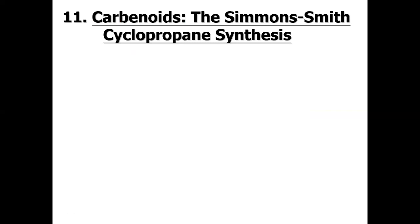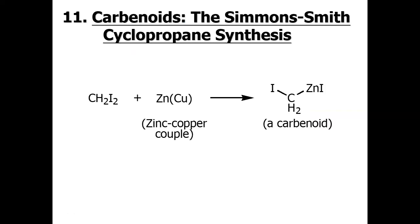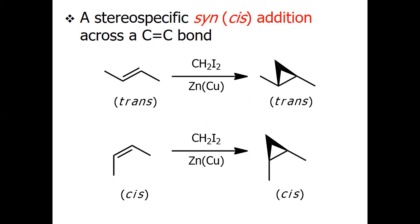Another reaction is cyclopropane synthesis using the Simmons-Smith reaction. This reaction involves coupling of diiodomethane with zinc and copper to give diiodomethylzinc iodide, which generates a carbene. This carbene adds across the double bond and the reaction is highly stereospecific depending on the nature of the alkene — if the alkene is trans we get a trans three-membered ring, and if cis we get a cis three-membered cyclic ring.